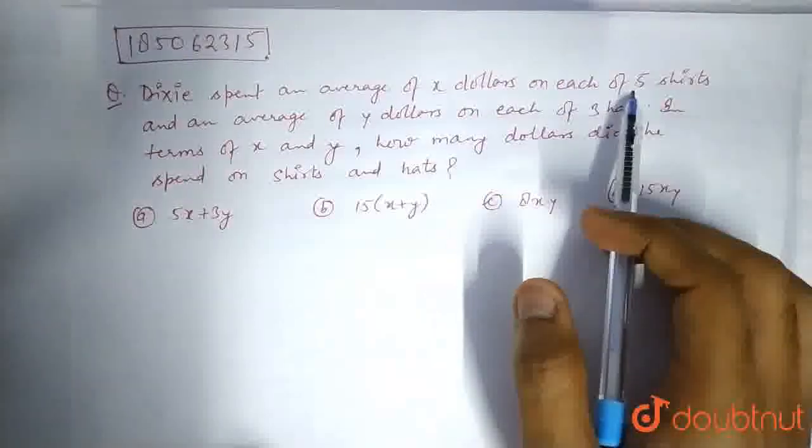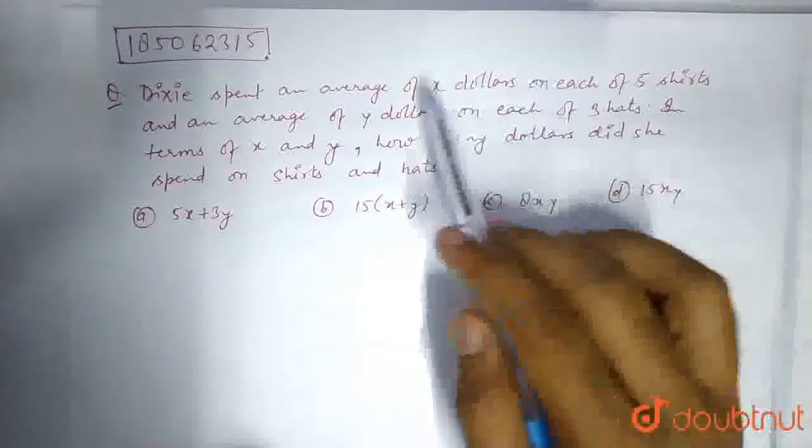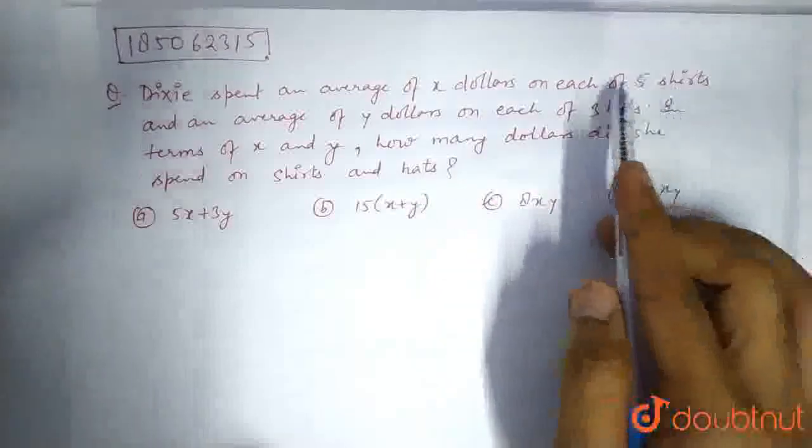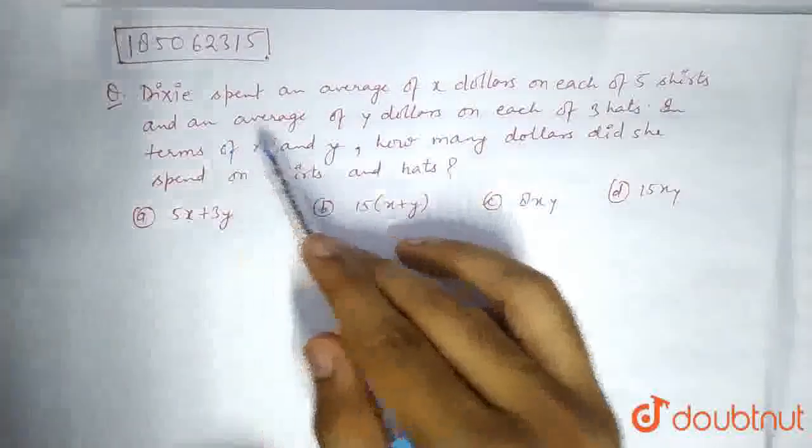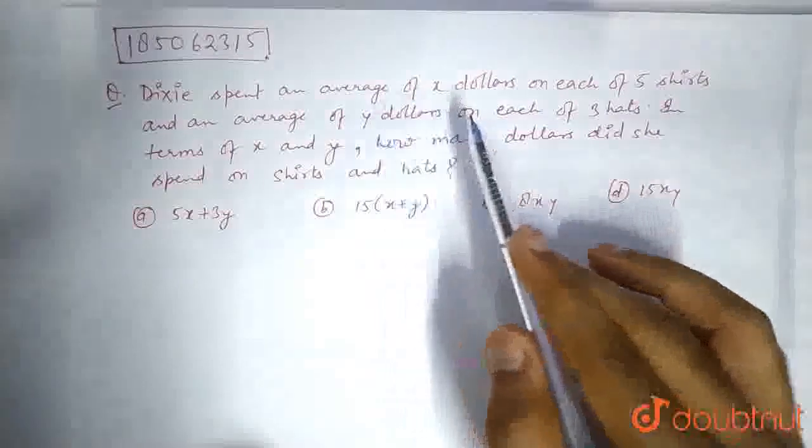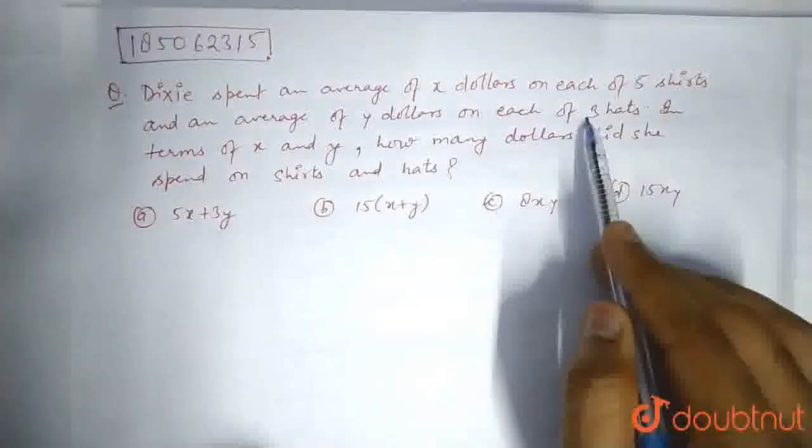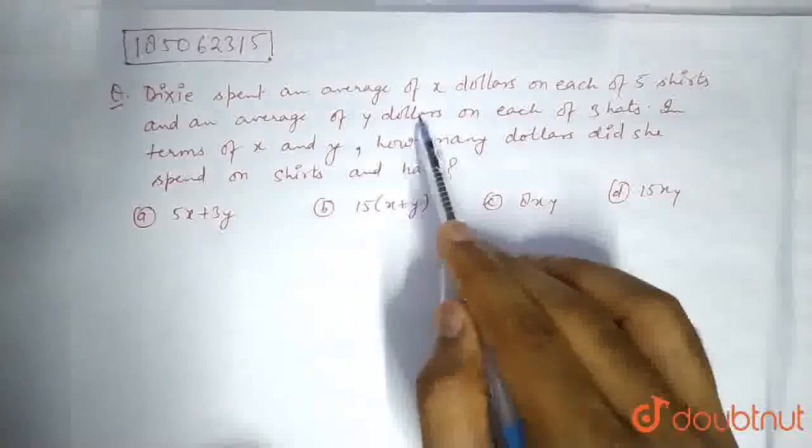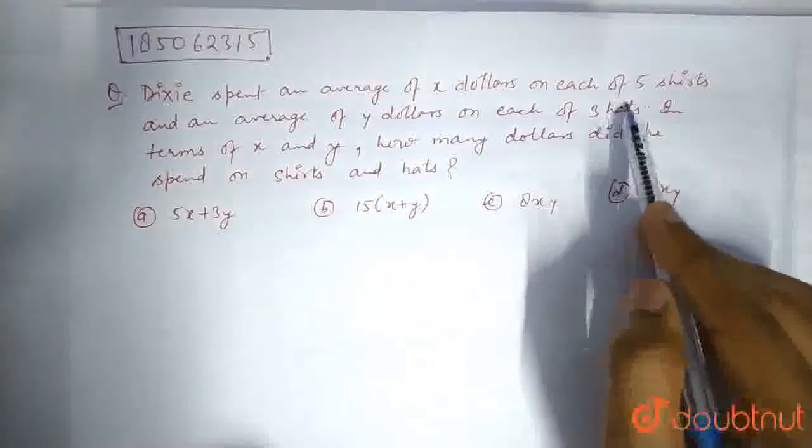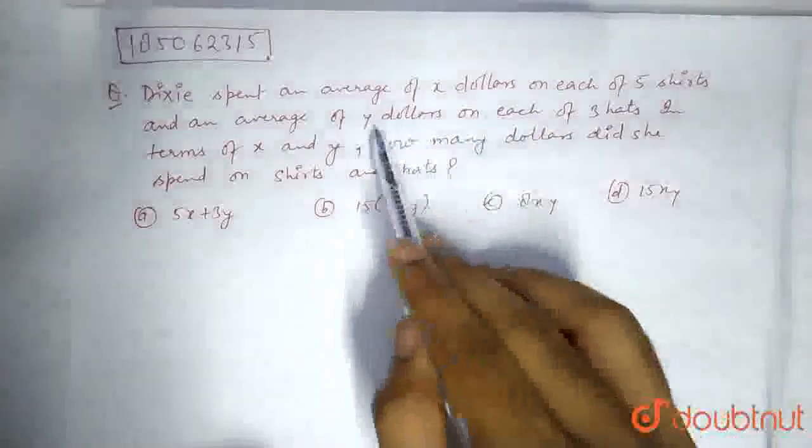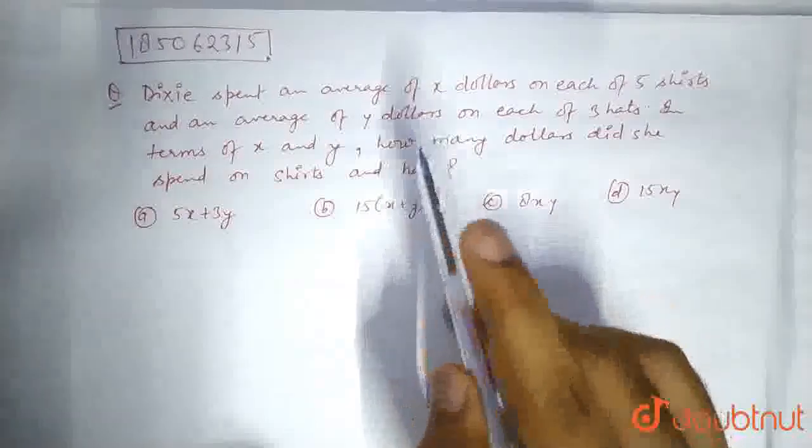So the total expenditure that is being done on the shirts is 5X. And likewise, the total expenditure which is being done on hats is 3Y, as she is spending Y dollars on each of 3 hats. That means she is buying 3 hats and she is paying Y dollars for each hat.